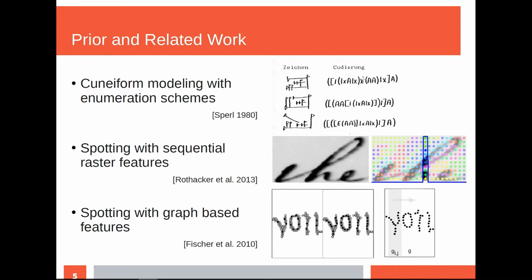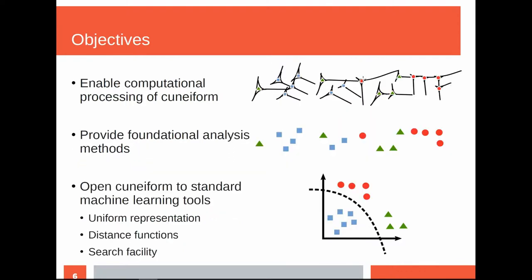For cuneiform, up until now we had no transformation so that we could depict cuneiform with computational methods. What we want to do is we want to enable computational processing of cuneiform. You can take cuneiform script, words, sentences, and have basic tools like those in computational linguistics. To provide these foundational analysis methods, we think that certain things are necessary.